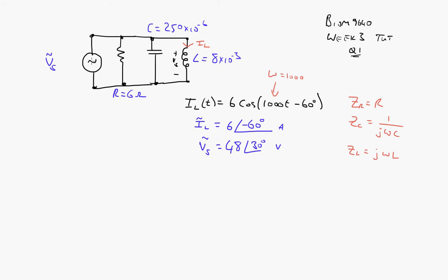So let's find the other two currents. These currents will be one here we'll call IR as a phasor. We should be writing these as phasors. And this one here IC, also a phasor.